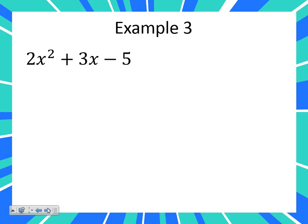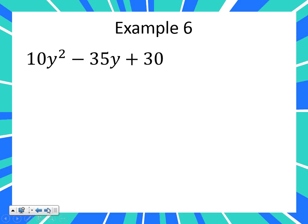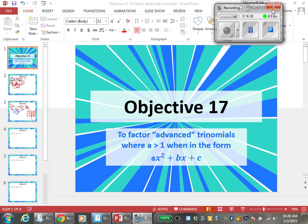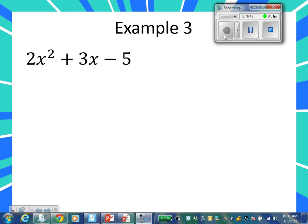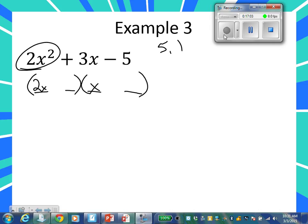So how about you try this one on your own and see how far you can get with it. First times first — our options are two X and one X. Any questions on that? Last times last — again, I would lay out your pieces. In this case there's not much to lay out: five and one. So what should go here? Positive five.